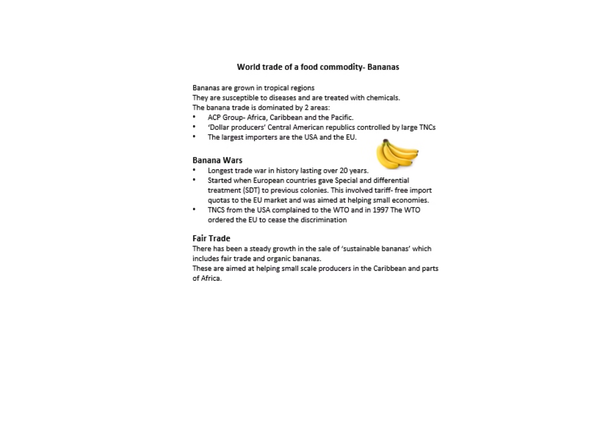Relating this to an example, your first mini case study is about bananas. Bananas are grown in tropical regions, but the banana trade is dominated by two areas: dollar producers controlled by large TNCs, and the ACP group — Africa, the Caribbean and the Pacific. The largest importers are the US and EU. This leads to the banana wars, the longest trade war in history lasting over 20 years, which started when the EU gave special and differential treatment to previous colonies. Now there's a push on fair trade, with steady growth in the sale of sustainable bananas — including fair trade and organic — aimed at helping small-scale producers in the ACP group.